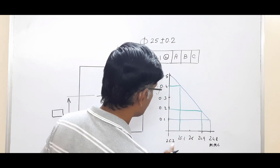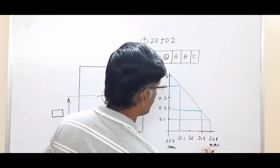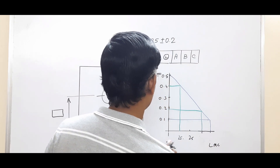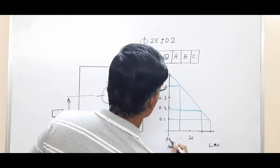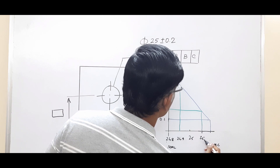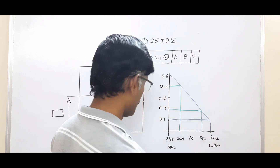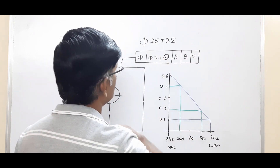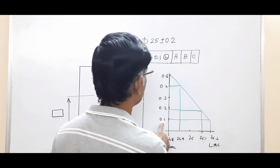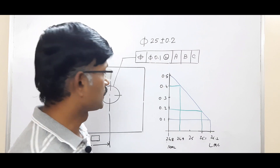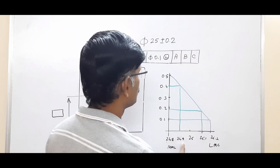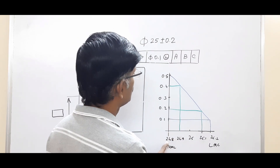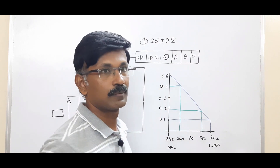The third condition is when you have least material condition. Now what will happen — you have to start with maximum material condition and go towards least material condition. So here: 24.8, 24.9, 25.0, 25.1, 25.2. When the LMC modifier is provided and the hole is produced at least material condition (25.2), you get a positional tolerance of 0.1, which is the value in the feature control frame. When the hole is produced at 24.9, you get a maximum positional tolerance of 0.5. When the hole is produced at maximum material condition, the positional tolerance is also maximum at 0.5.